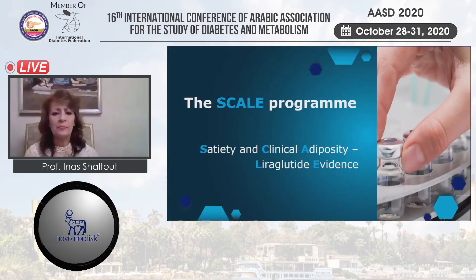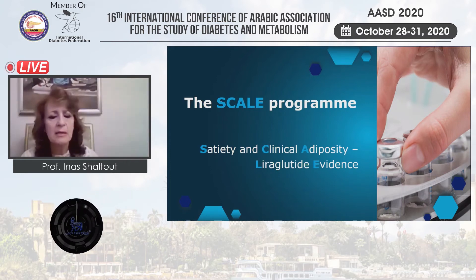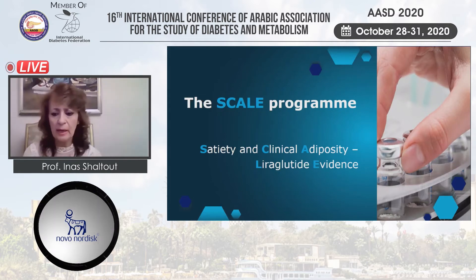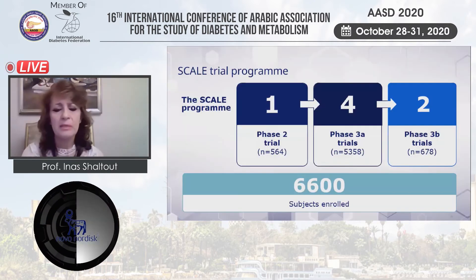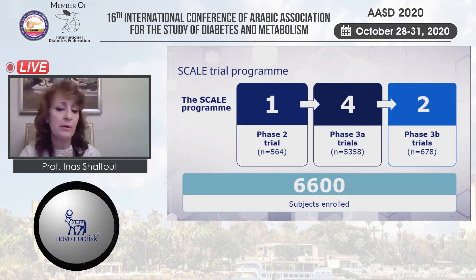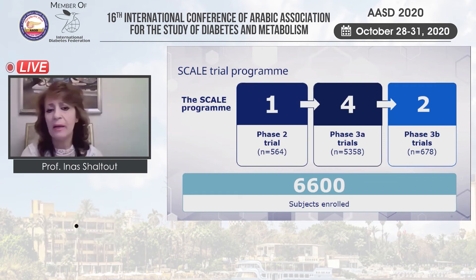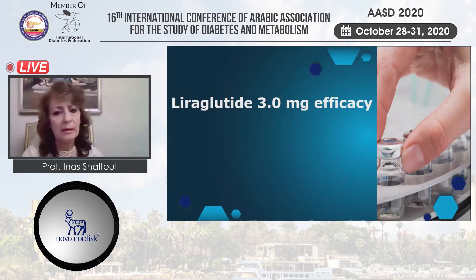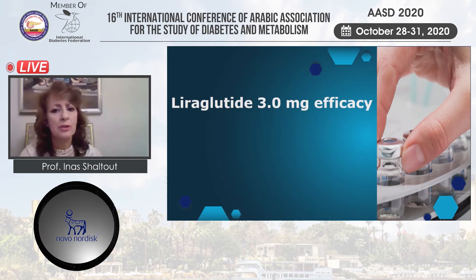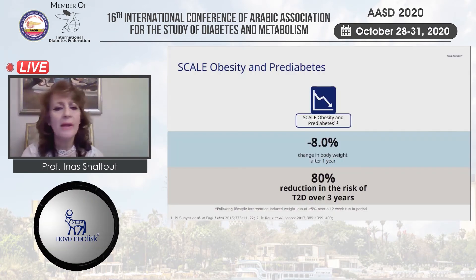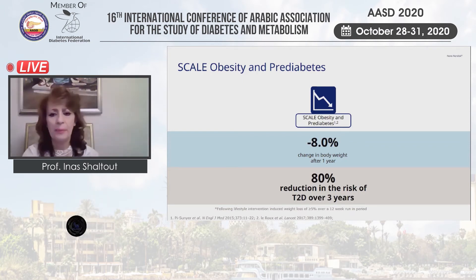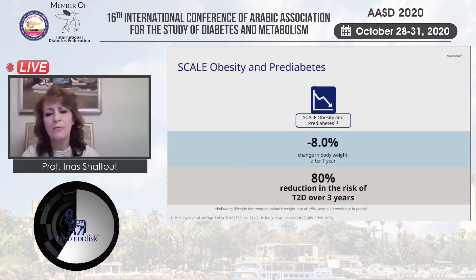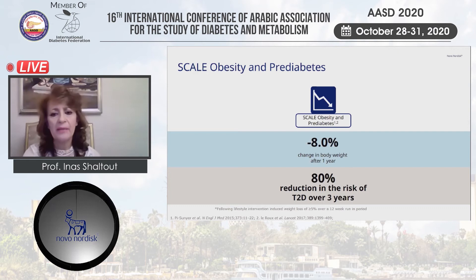Liraglutide 3 mg was studied extensively on over 6,000 cases in the SCALE program — the Satiety and Clinical Adiposity Liraglutide Evidence program. 6,600 subjects were enrolled across different phases of the trial. The SCALE Obesity and Pre-Diabetes trial on more than 3,000 cases showed remarkable effects on body weight reduction, with an 8% reduction in body weight after one year.